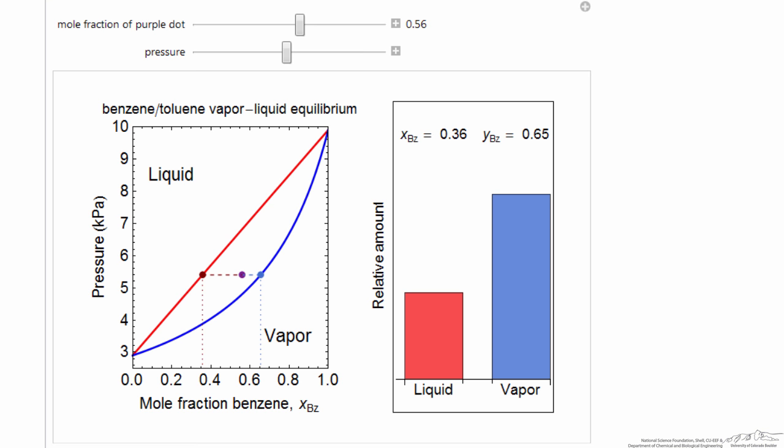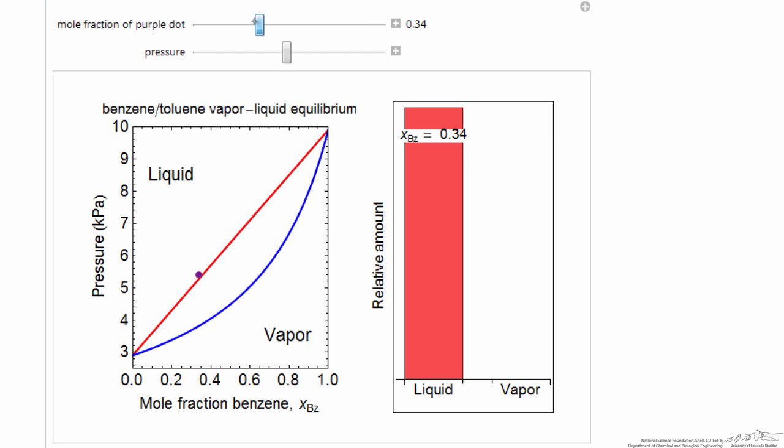Here is the interactive version, where I can change the overall mole fraction by moving this slider. Notice as I move it to the left, the amount of liquid increases, the amount of vapor decreases in the bar graph, something the lever rule would allow us to determine. We move it far enough to liquid, of course this region is all liquid.